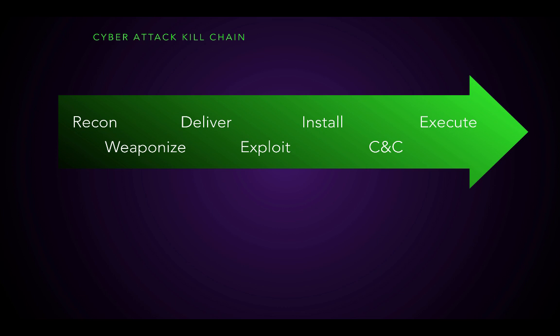We can use the diamond model in conjunction with the cyber attack kill chain. The cyber attack kill chain was developed by Lockheed Martin and basically explains the life cycle of an attack on your network. An attack goes: first they do reconnaissance against your network, then they weaponize or formulate a plan, then they deliver the attack, that exploits and executes in your network, gets installed, then there's command and control — where the malware receives instructions — and finally execution, which could be deleting files, uploading files, or infecting with ransomware.